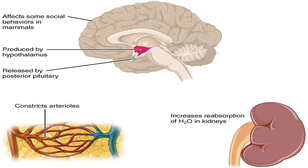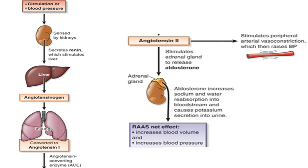ADH, which is antidiuretic hormone, also called vasopressin, is made by the hypothalamus and released by the posterior pituitary. The purpose of this hormone is to increase blood volume and constrict arterioles. It increases blood volume by increasing water reabsorption by the kidneys. Another hormone that also increases blood volume is aldosterone. In the RAAS, or the renin-angiotensin-aldosterone system, aldosterone also increases blood volume by absorbing sodium, and water follows by osmosis. At the same time, angiotensin constricts arteries, and the RAAS will thus increase blood pressure based on the blood pressure experienced by the renal artery.